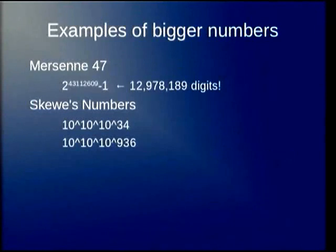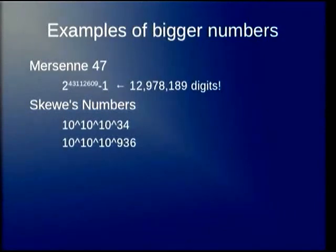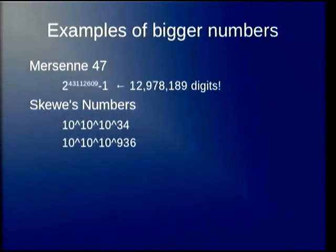But numbers get much bigger than this. Mersenne primes are of the form 2^n minus 1. The largest one found so far is 2 to the 4 million — it has 4 million binary digits, about 12 million decimal digits. Prime numbers are entertaining. The distribution of prime numbers — you'd figure it wouldn't be that difficult, considering the first one is 2. But they still haven't been able to figure out how to do this analytically.